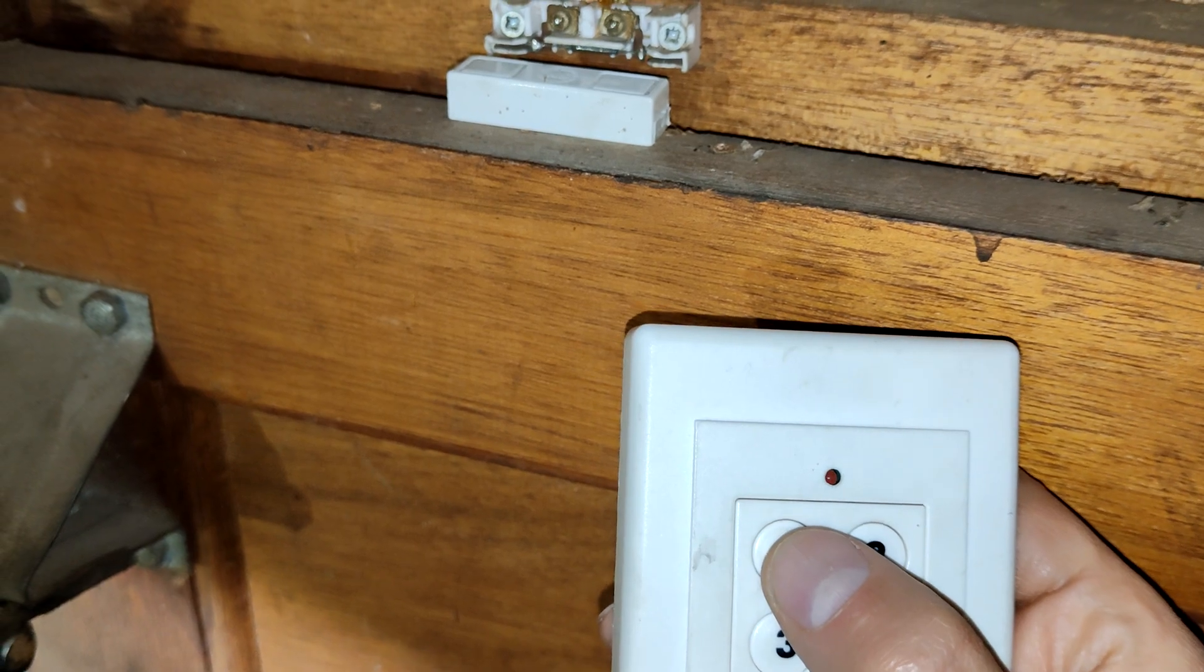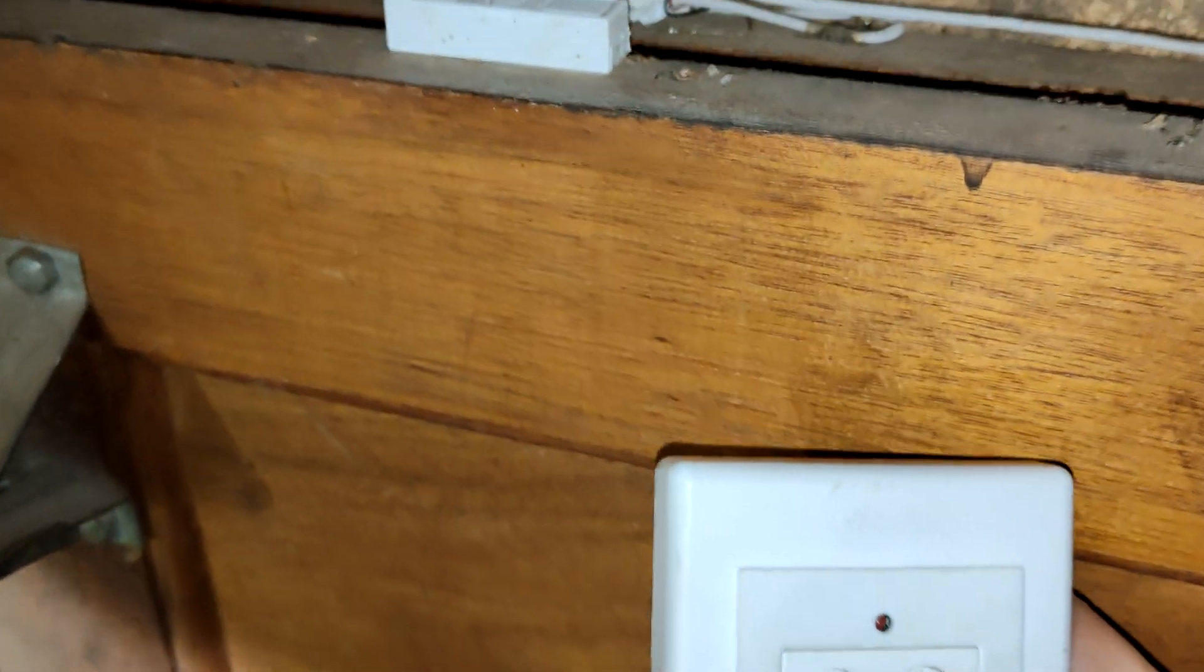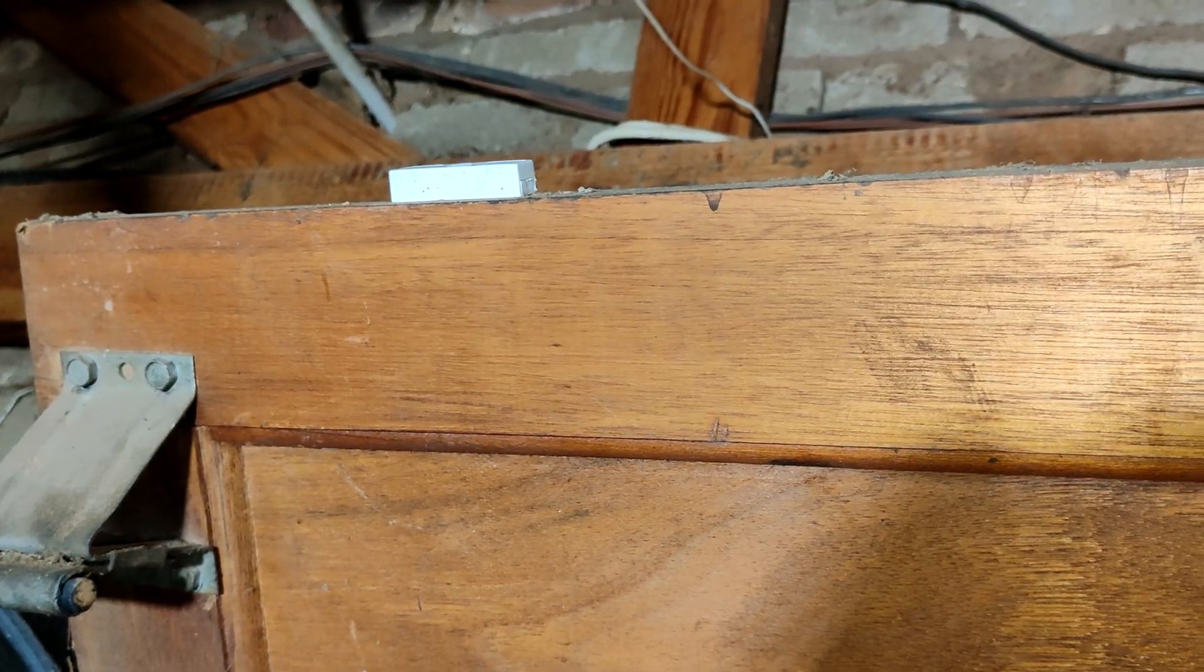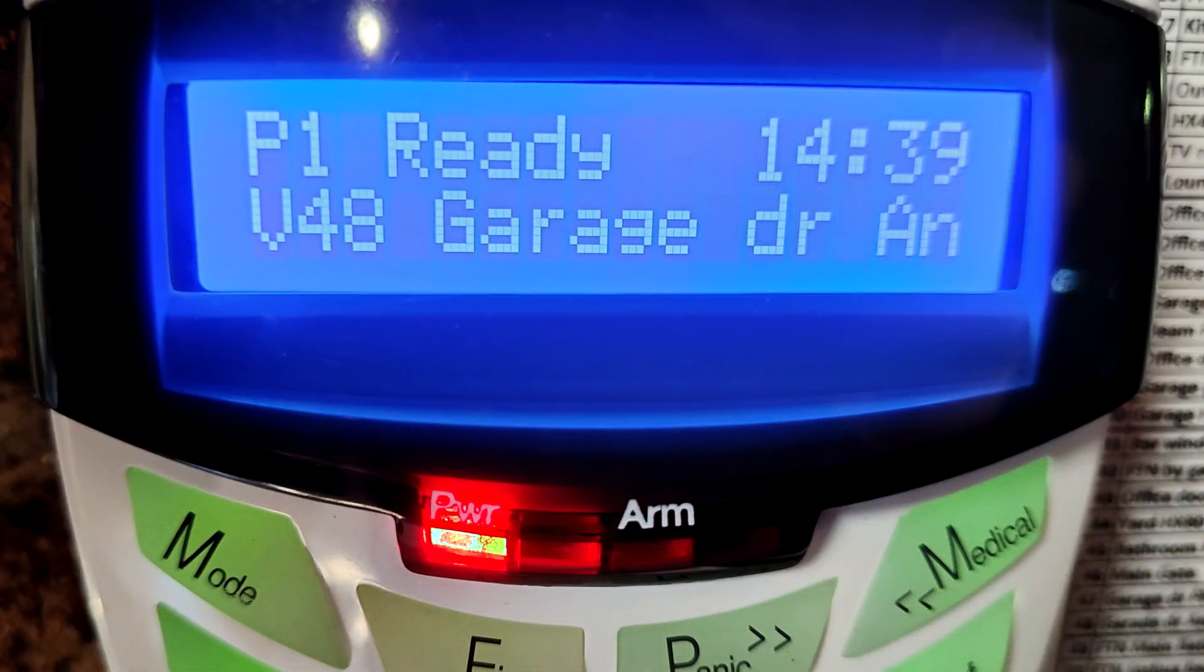When I activate the door, there it goes. There's the magnet side which has now moved away from the reed relay. So on the alarm it is now saying the garage door is open.